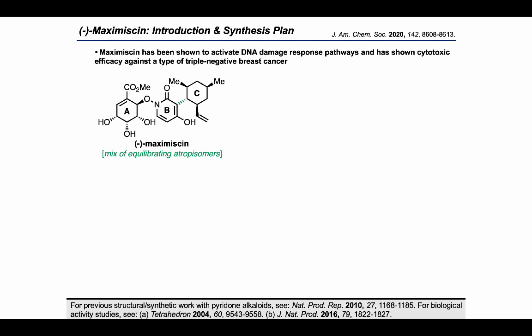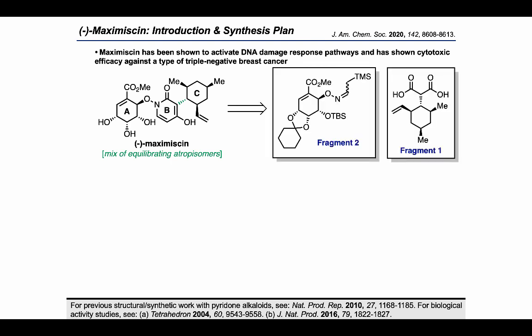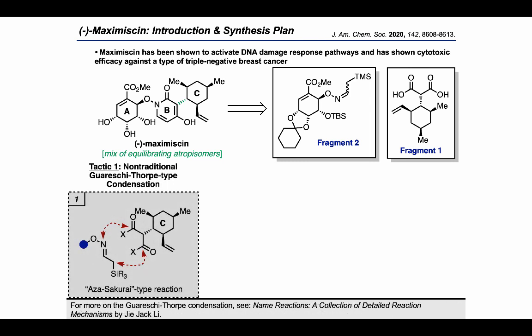The authors of this paper devised a convergent synthesis that led back to two fragments using four key tactics. First, they recognized that the pyridone may be able to be constructed using a kind of non-traditional Guarashi-Thorpe-type condensation. This tactic is important because it lets you disconnect the final target into two fragments of approximately equal complexity. Their idea was to take advantage of the electron flow seen in the homo-Mukaiyama reaction, where silicon plays a critical role in allowing a nucleophilic attack.